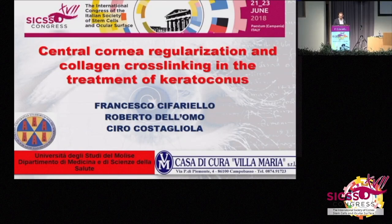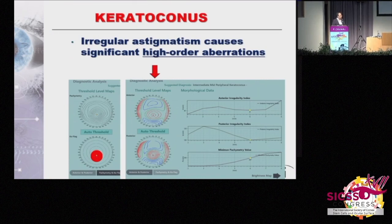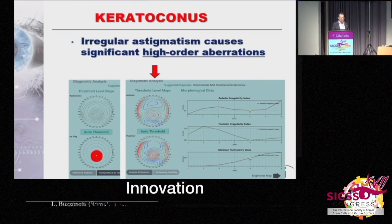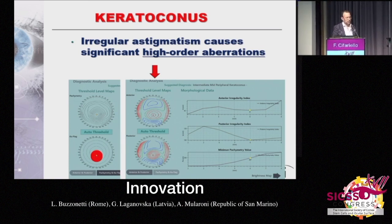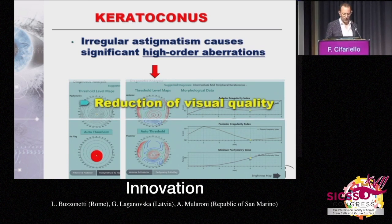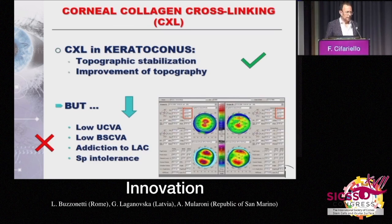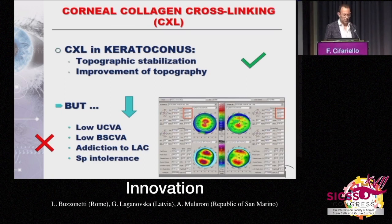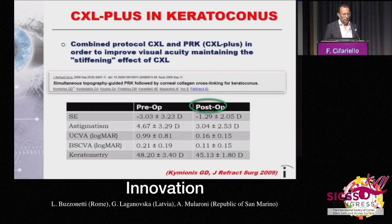Good afternoon, and let me thank the organizers for the invitation to come here. We know that in patients with keratoconus, irregular astigmatism can cause significant high-order aberrations, and this implies a reduction of visual acuity. With cross-linking procedures, we may achieve in these ectatic corneas stabilization and sometimes even topography improvement, but they remain with an altered shape of the cornea and therefore a reduction of visual acuity and sometimes dependence on contact lenses.